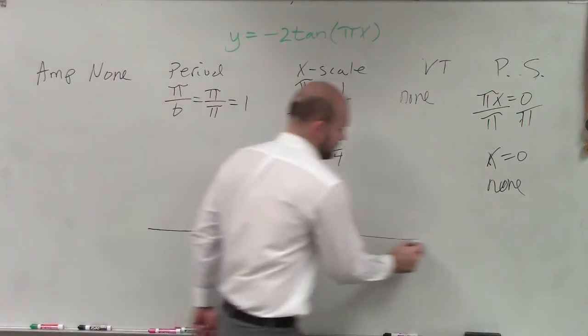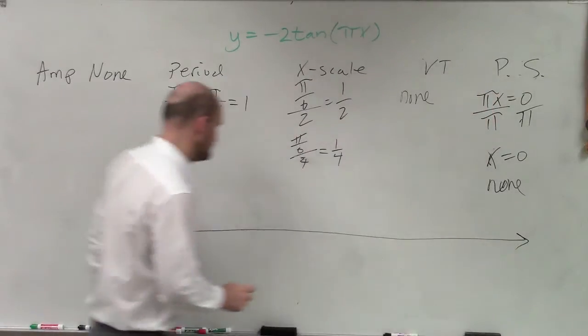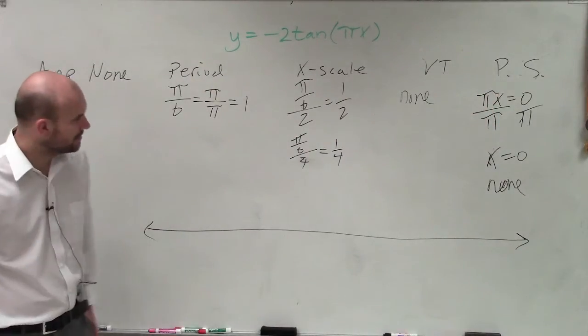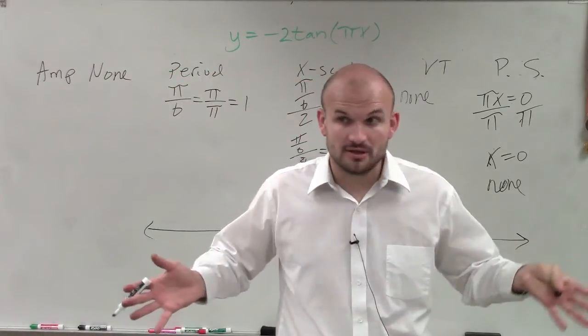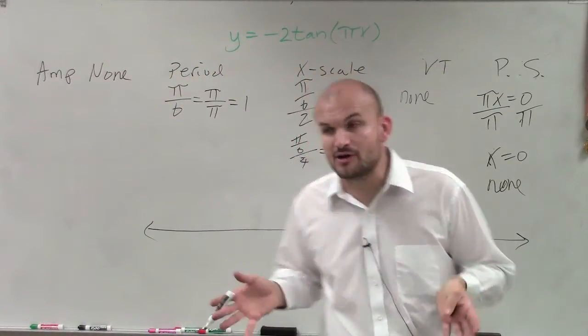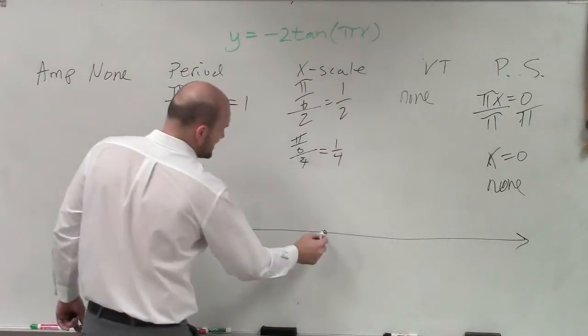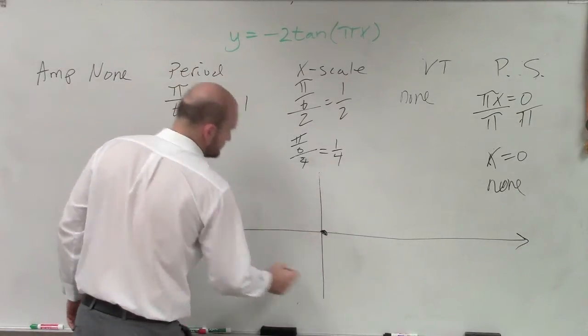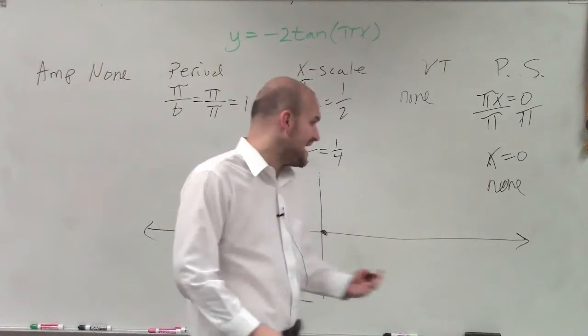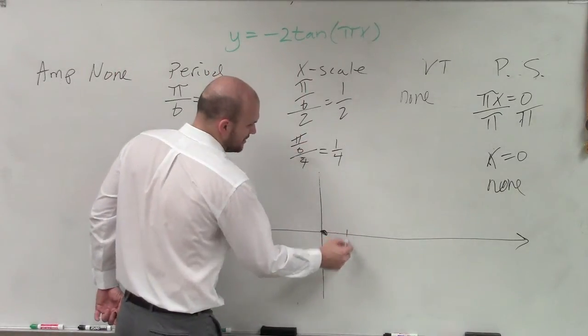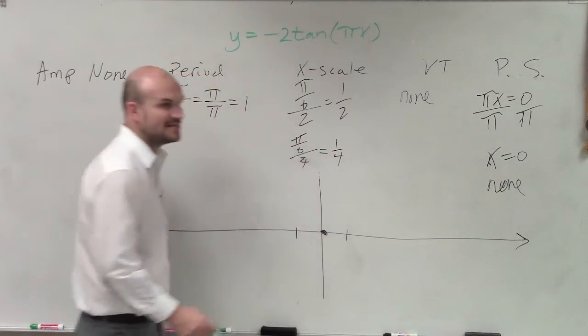So let's go ahead and graph. Now, remember, tangent untouched. The parent graph of tangent untouched has an x intercept at y equals 0. Then, the next scale is the asymptote. And the next scale is the asymptote.